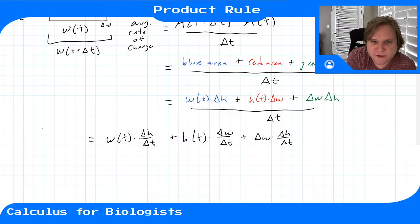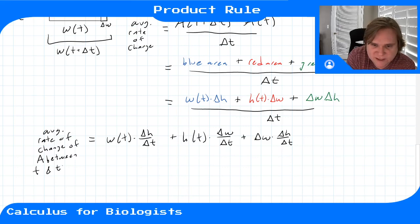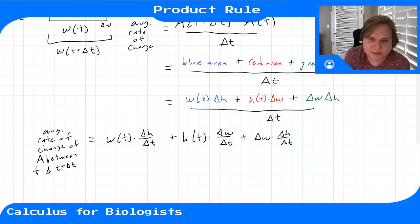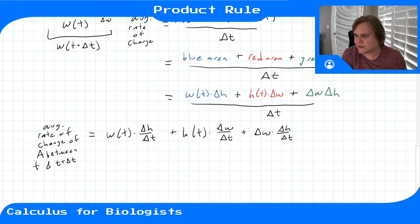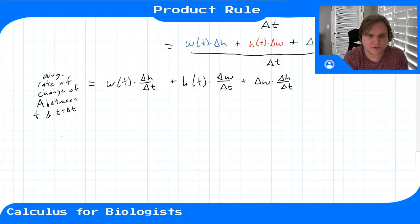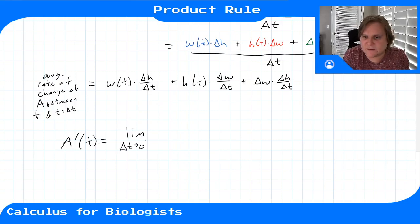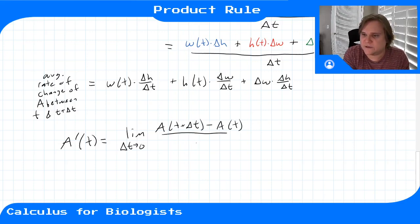This is the average rate of change of area between t and t plus delta t, equal to w of t times the change in height over change in time, plus h of t times the change in w over change in time, plus the change in width times the change in height over change in time. If we take the limit, we'll get the instantaneous rate of change — the derivative. The limit as delta t goes to zero of a of t plus delta t minus a of t over delta t equals this whole expression.